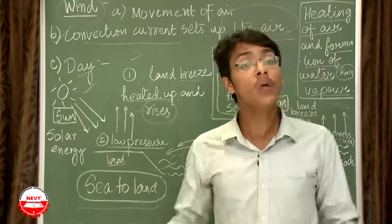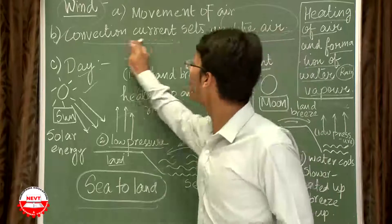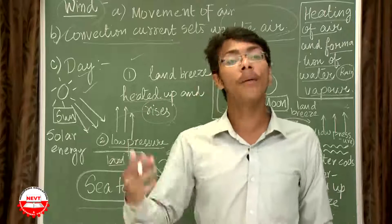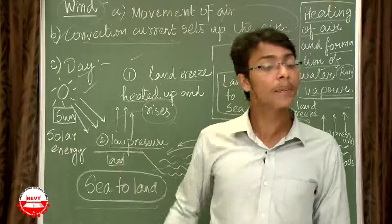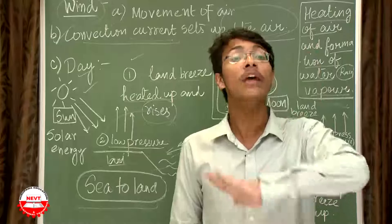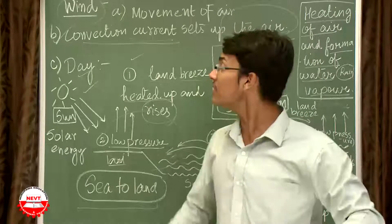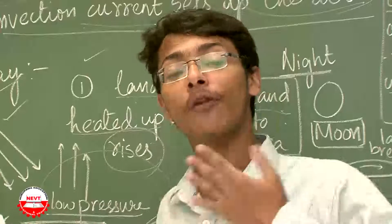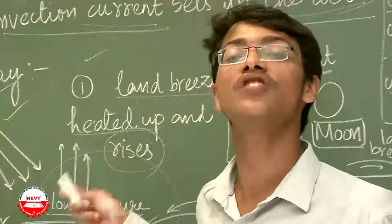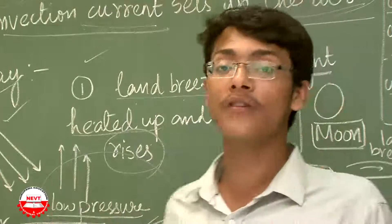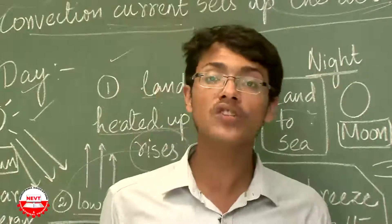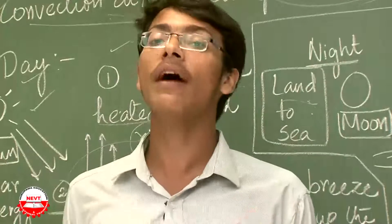The convection current is set up by solar energy working together with pressure and the process of heating. Convection is that process where there is transfer of heat from one body to another without any physical touch — similarly, the sun is transferring energy to the land and water and creating low pressure areas. There are two more factors responsible for wind to flow: one is the rotation of the Earth around its axis.